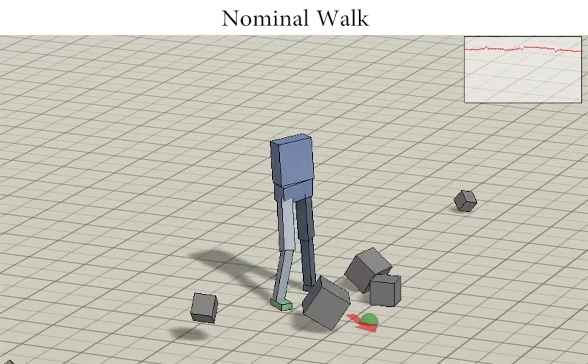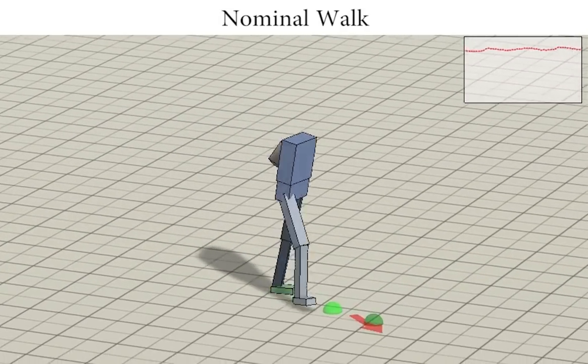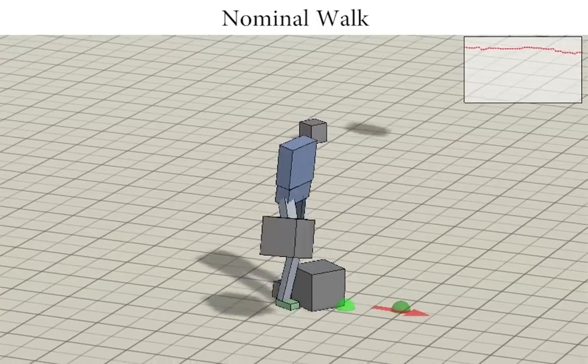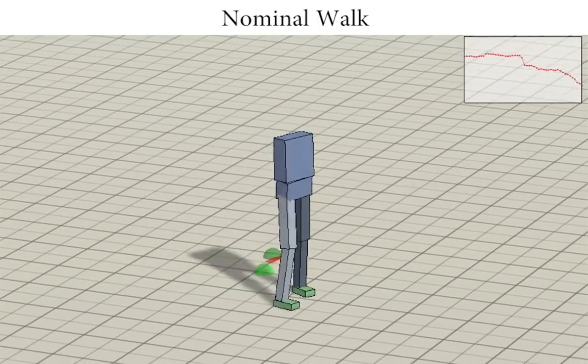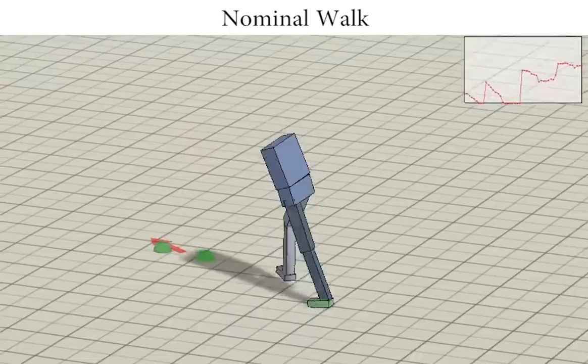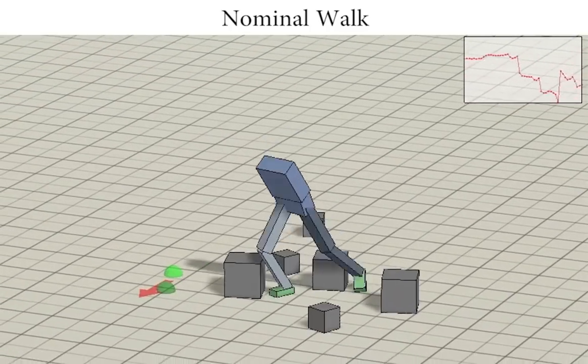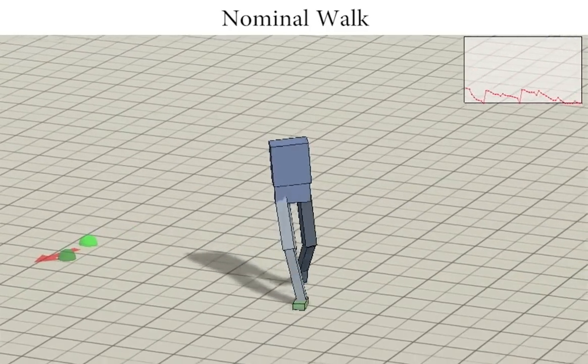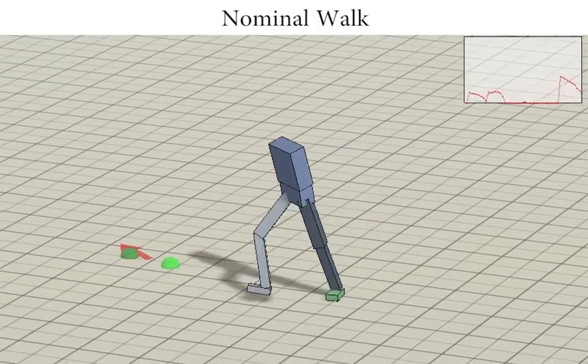Here we show robustness to external forces. The training results in controllers that are robust to large perturbations which were not encountered during training. The plot at the top right illustrates the character's expected future rewards, which decrease when the character is off-balance.